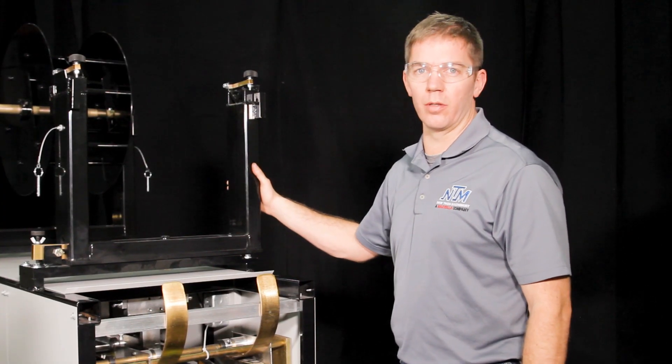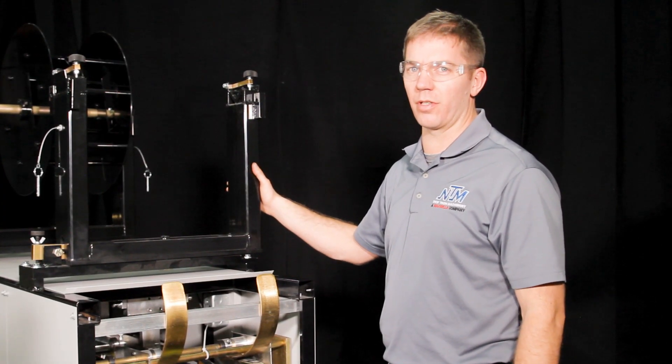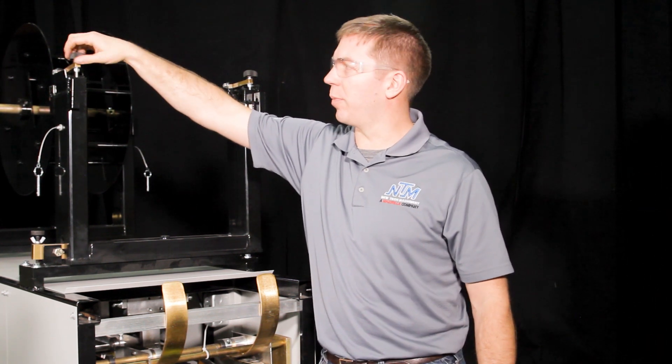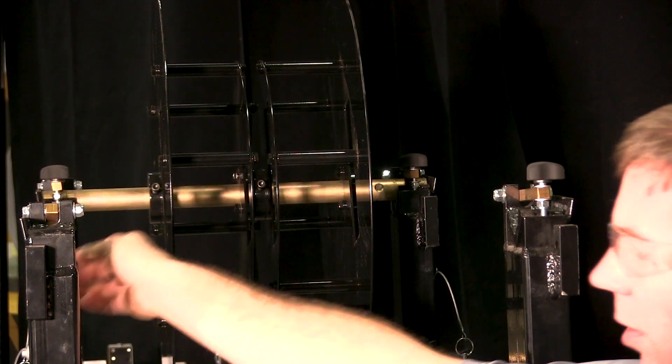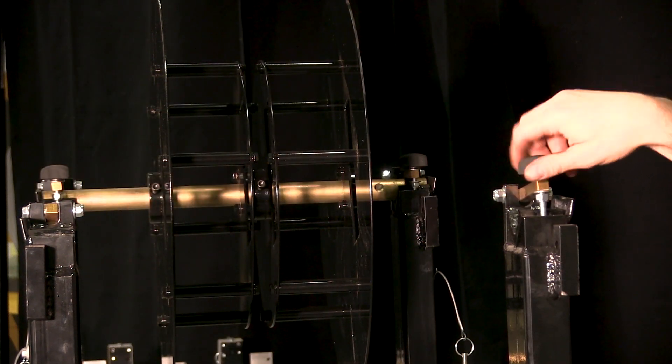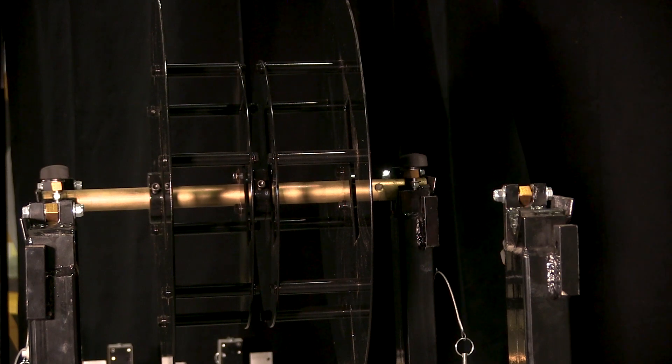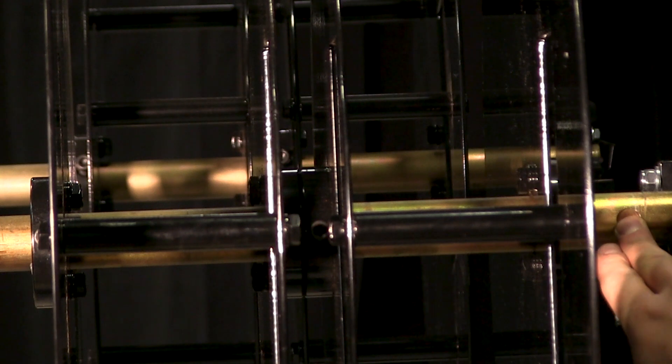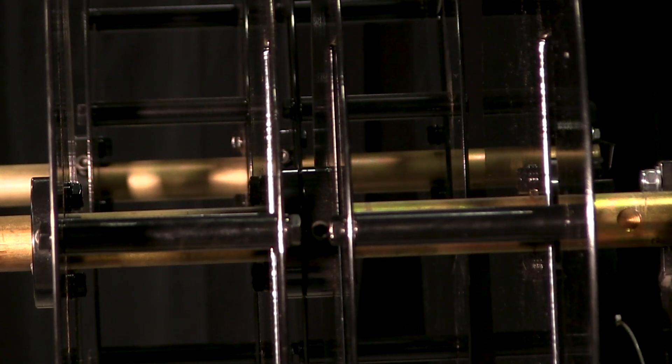So next we're going to install the reel onto the turnstile but before you do that you want to make sure that the lock down bars are in the open position prior to lifting. You want to make sure that the locating divots on the shaft are on the right side of the machine.